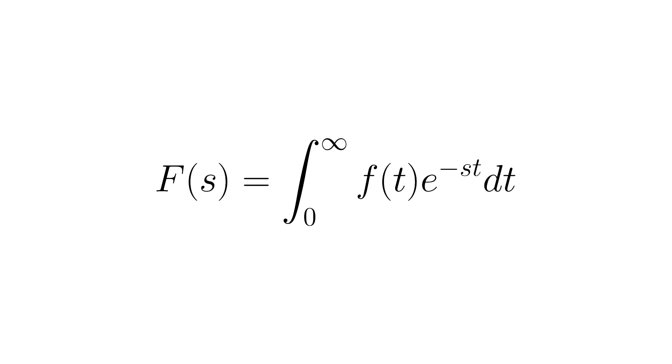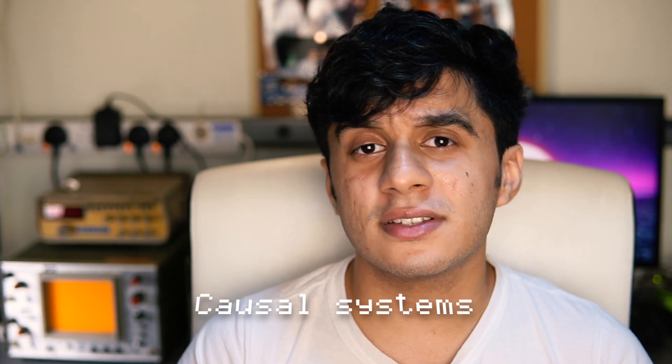Why do we define Laplace transforms using zero and infinity as the limits of the integral? In engineering we typically deal with causal systems, meaning that if you have an input, the output happens as a result of that input — a cause-and-effect scenario. Non-causal systems, where the system responds before the input occurs, don't really make physical sense. There is a Laplace transform defined for non-causal systems called the bilateral Laplace transform, where the limits go from minus infinity to plus infinity.